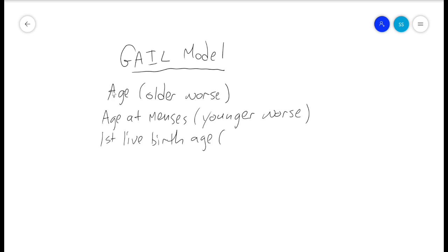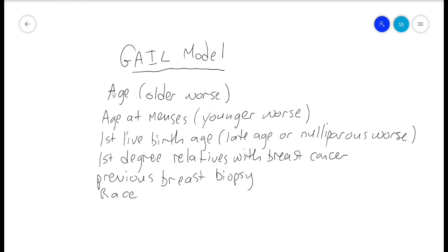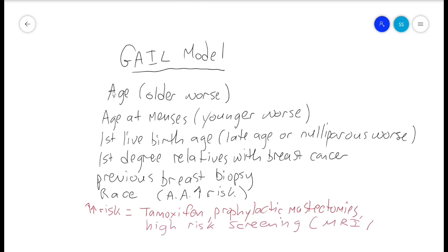You need to know the basic risks for breast cancer. Know the Gail model that contains: age (being older is worse), age at menarche (being younger is worse), age at first live birth (having a first birth at a late age or being nulliparous is worse), having first-degree relatives with breast cancer is worse, having a previous breast biopsy is worse, and certain races such as African American are higher risk. Higher risk patients may consider risk reduction with tamoxifen or prophylactic mastectomies or high-risk screening such as alternating mammograms and breast MRI. Tamoxifen is used as chemoprophylaxis in women considered high risk for developing breast cancer, the five-year Gail model risk of over 1.67 percent, or if the patient has LCIS or atypical ductal hyperplasia or ADH, for example. This was shown in the NSABP P01 trial.